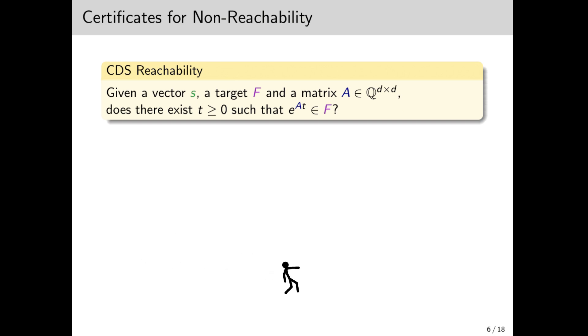Now, suppose we know, somehow, that e^(At)s hits F for some t. Then this t can serve as a certificate for reachability. Well, it's not quite that simple since t might be transcendental, but it's close enough. What we want in this work is to find a certificate for non-reachability. Clearly, we can't hope to always find a certificate, or the problem would become decidable, but let's see what we can do.